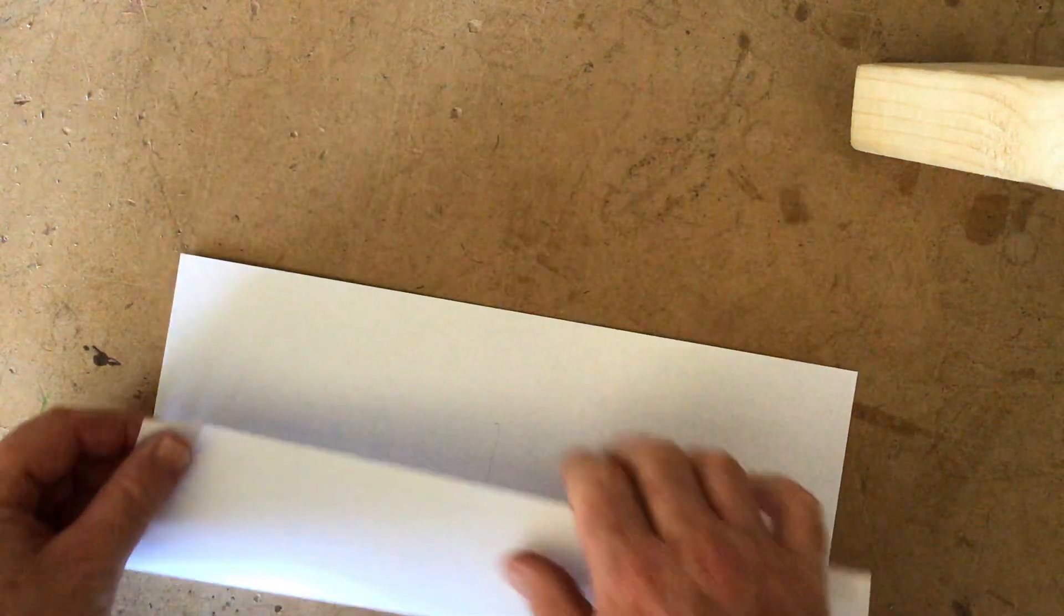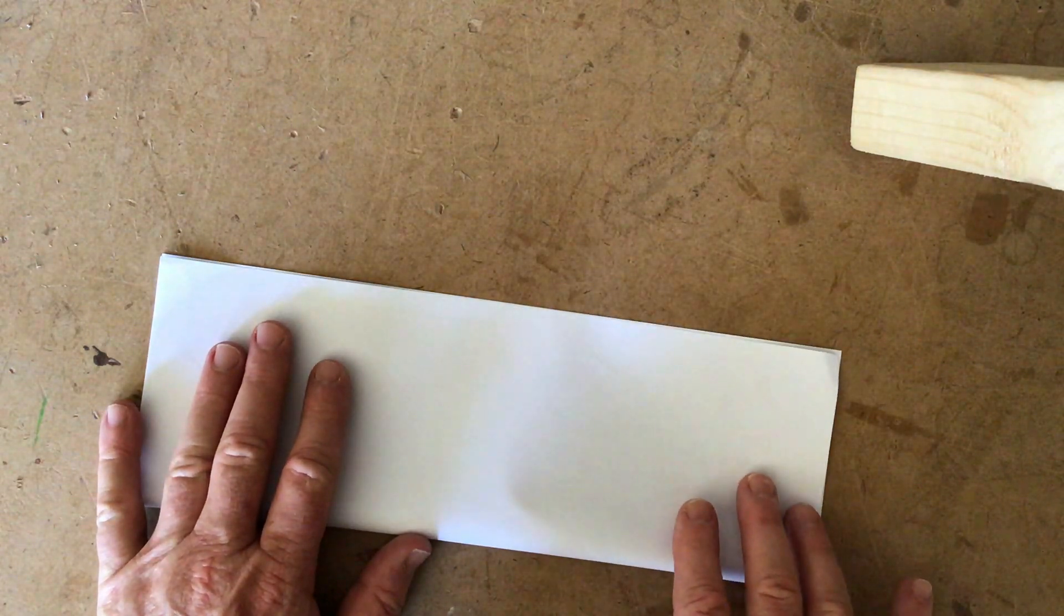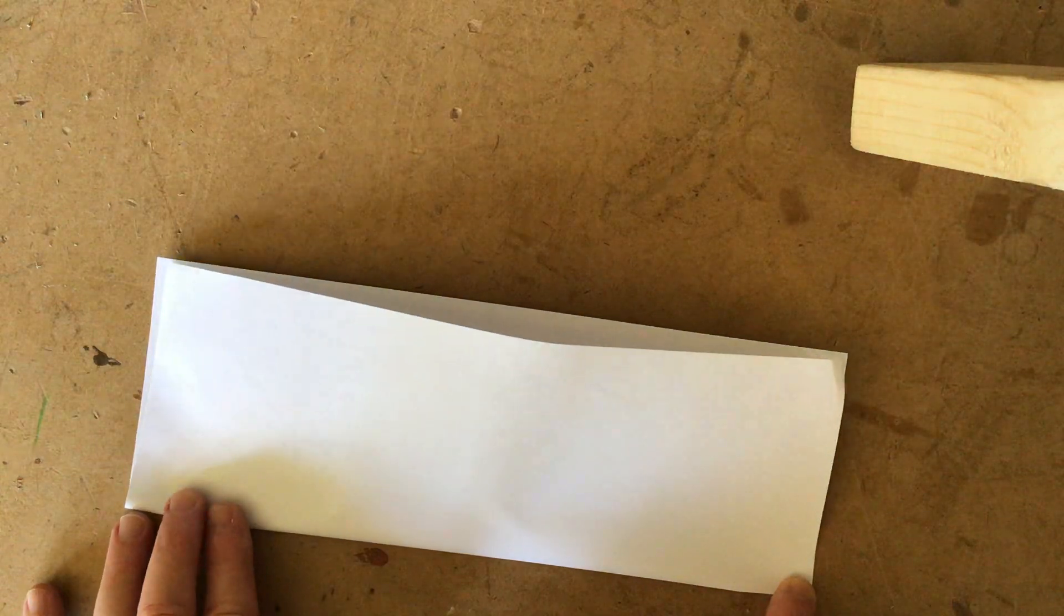Get your A4 sheet of paper. If you go halfway and halfway, you just make a little mark there.